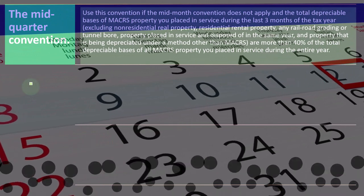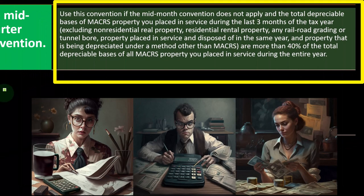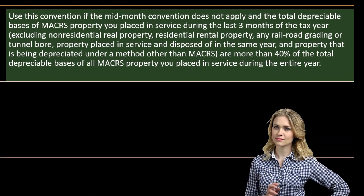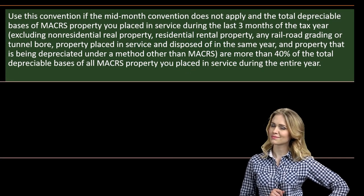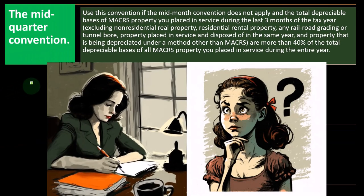The mid-quarter convention applies if the mid-month convention does not apply and the total depreciable basis of MACRS property placed in service during the last three months of the tax year — excluding non-residential real property, residential real property, railroad grading or tunnel bore, property placed in service and disposed of in the same year, and property depreciated under a method other than MACRS — exceeds 40% of the total depreciable basis of all MACRS property placed in service during the entire year. Under the half-year convention, whenever you buy property during the year, you receive half a year of depreciation.